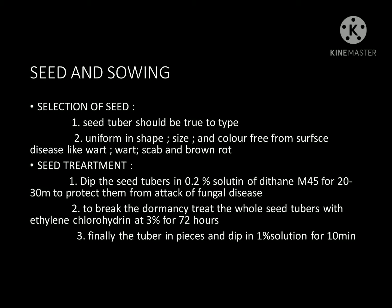Selection of seed tubers: they should be true to type, uniform in shape, size and color, and free from surface diseases like wart and scab. Seed treatment: dip the seed tuber in 0.2 percent solution of Dithane M-45 for 20 to 30 minutes to protect from fungal disease. To break dormancy, treat the whole seed tuber with ethylene chlorohydrin at 3 percent for 72 hours.